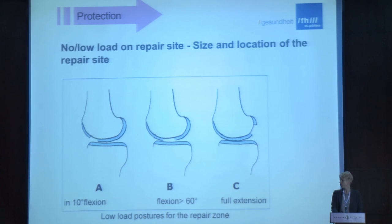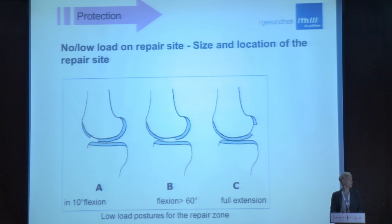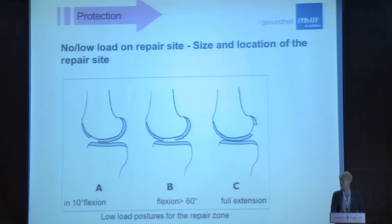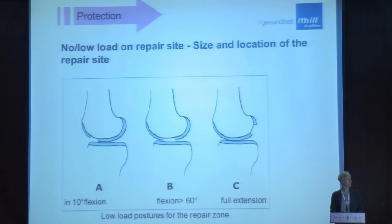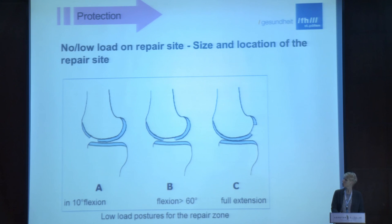If you have a defect in the tibiofemoral joint, axial loading might be deleterious for the repair tissue. If the defect is in the anterior aspect of the femoral condyle, implement activities in about 10 degrees of flexion. If the defect is in the central part — where many tibiofemoral defects are situated — you can perform activities in a flexion angle above 60 degrees. If the defect is in the posterior part of the femoral condyle, you can do weight-bearing activities in full extension. This provides low-load postures for the repair zone.